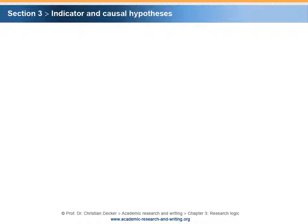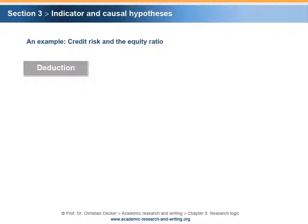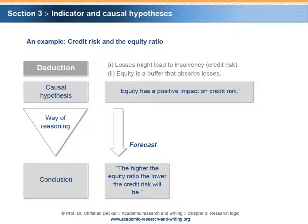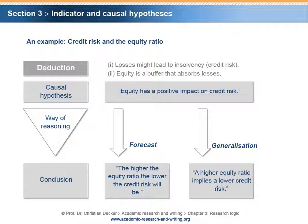If inductive reasoning by way of an indicator hypothesis is problematic, the question is whether we can apply deductive reasoning as an alternative. Using the credit risk and equity ratio example and applying deductive logic, we might reason as follows: losses might lead to insolvency — i.e., credit risk. Equity is a buffer that absorbs losses. Therefore, we derive the causal hypothesis: 'equity has a positive impact on credit risk.' From this, we could derive the forecast 'the higher the equity ratio, the lower the credit risk,' or the generalization 'a higher equity ratio implies a lower credit risk.' Again, this type of reasoning might also be problematic.